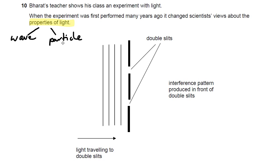Now this is called Young's double slit experiment, and it's quite a difficult diagram to understand at first.